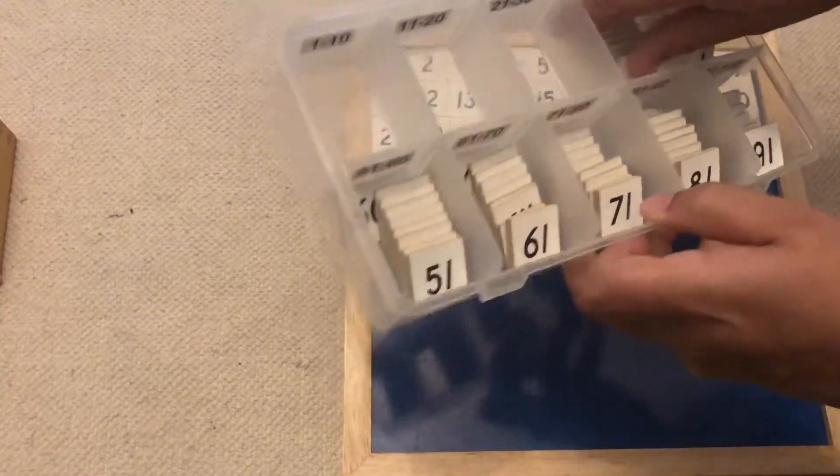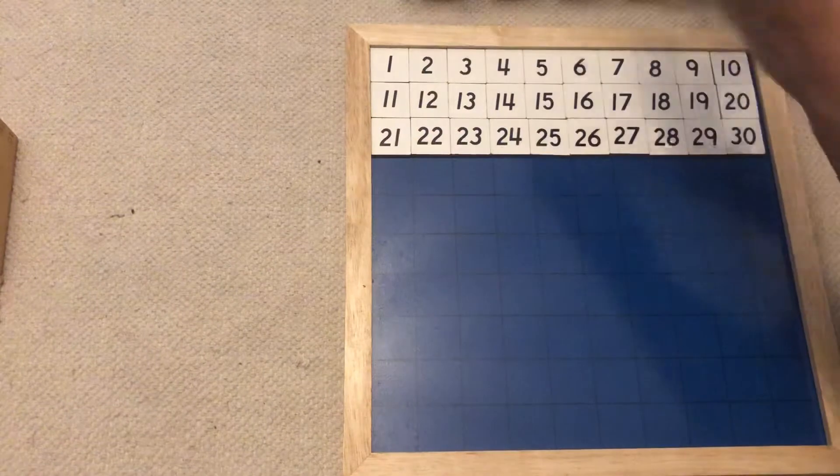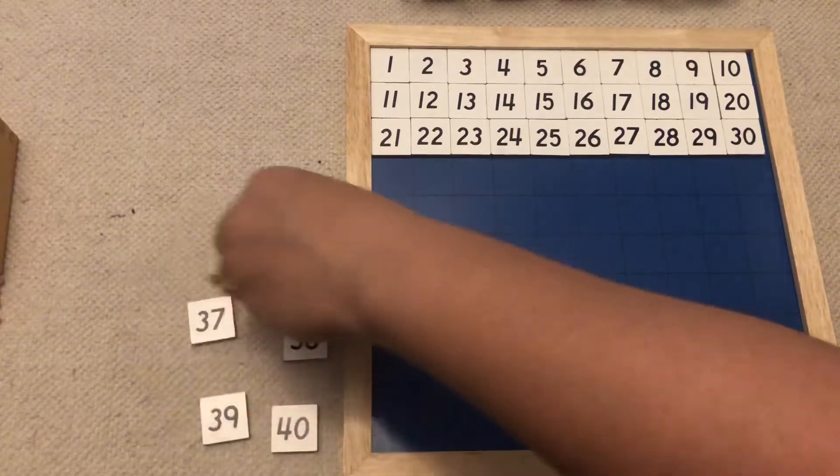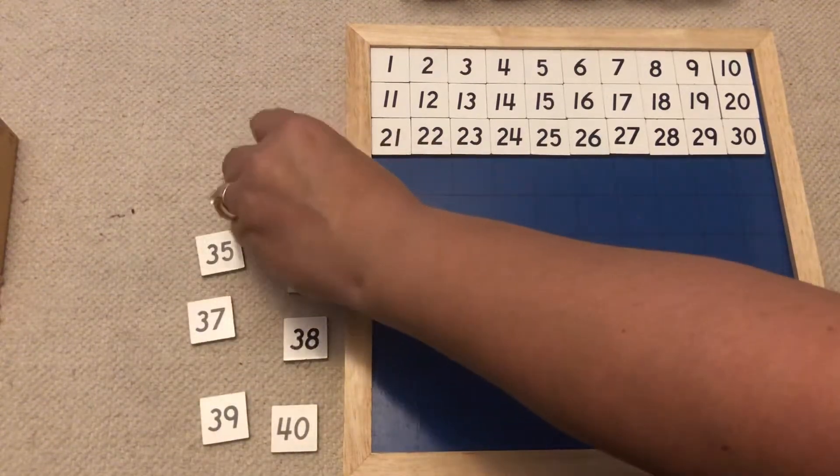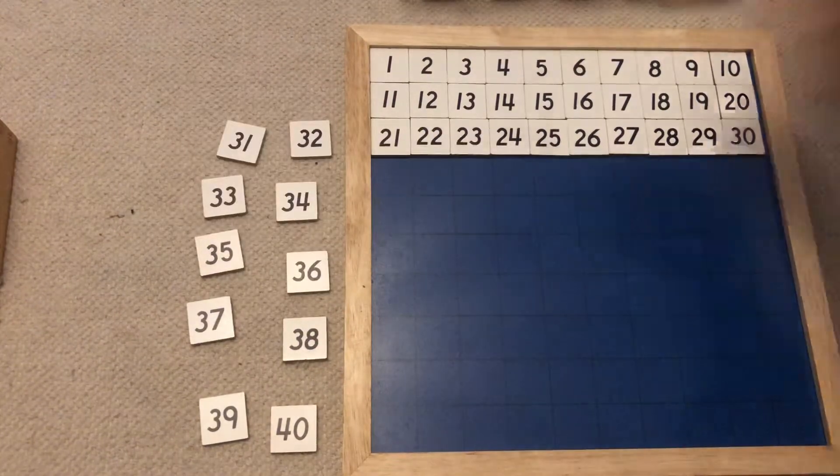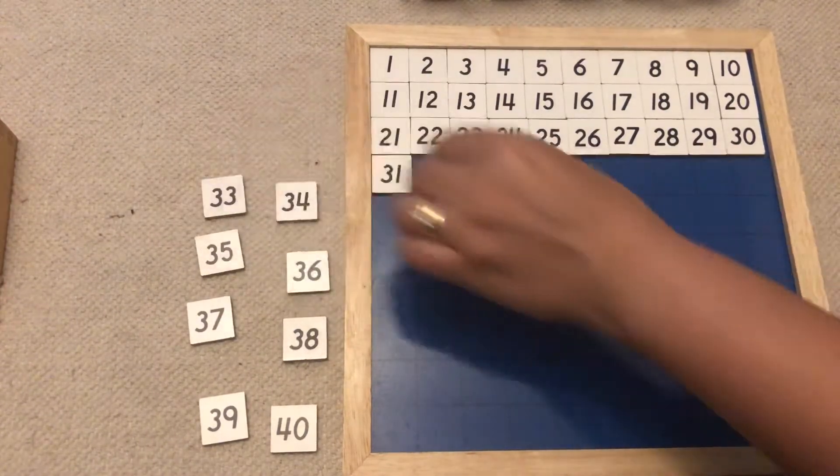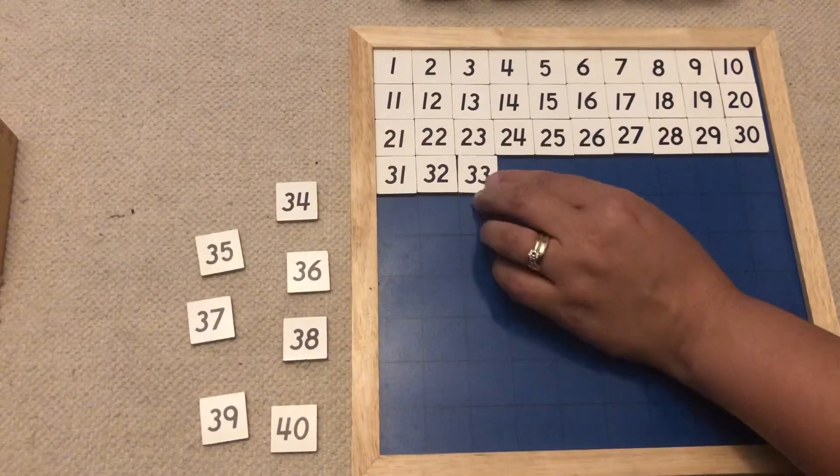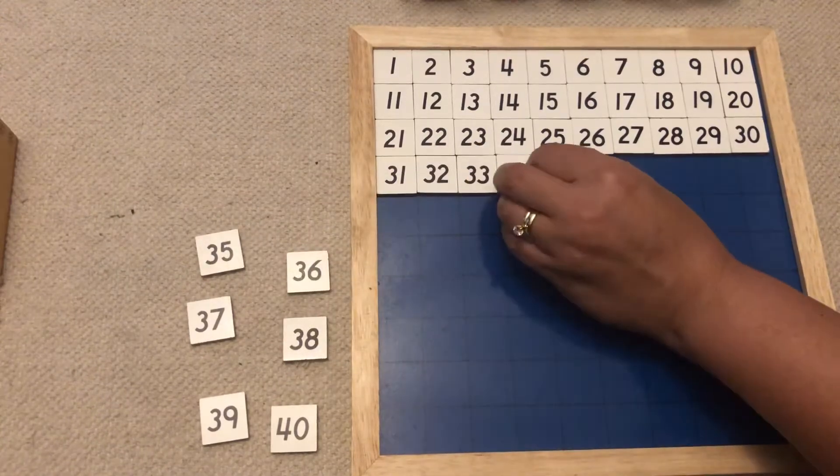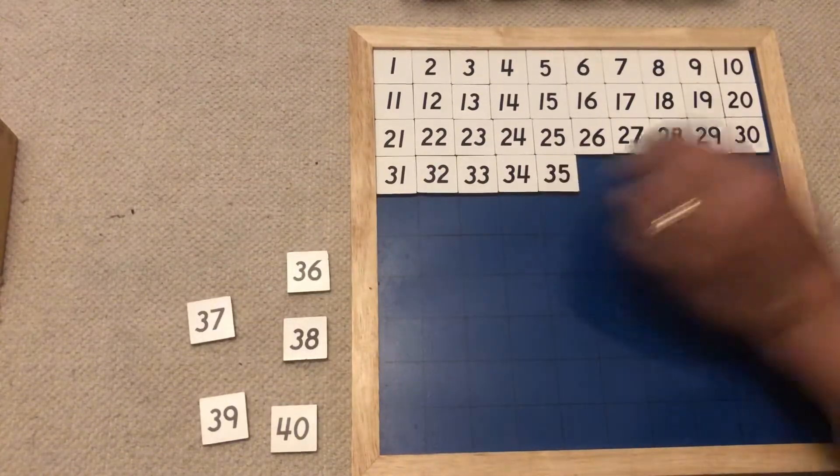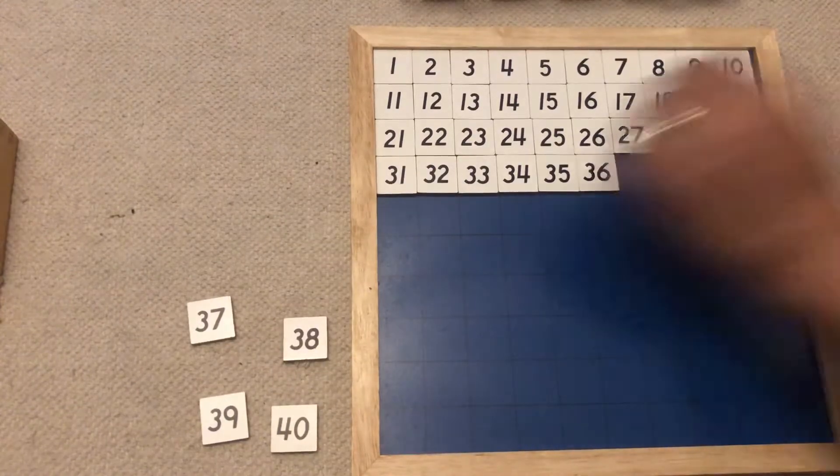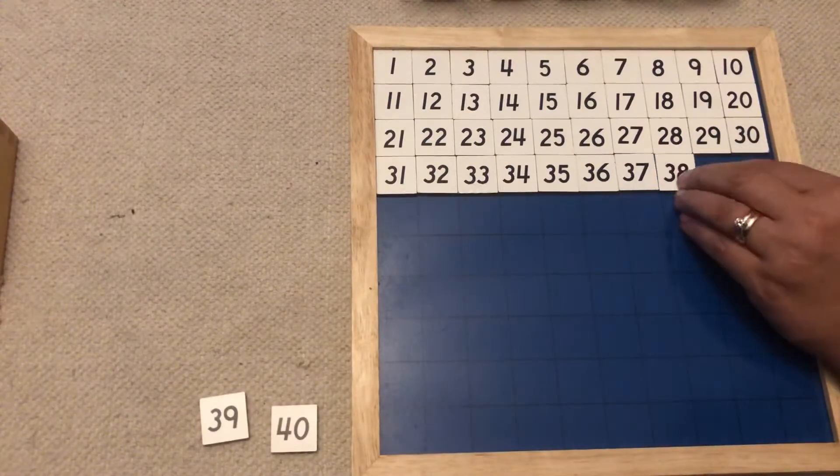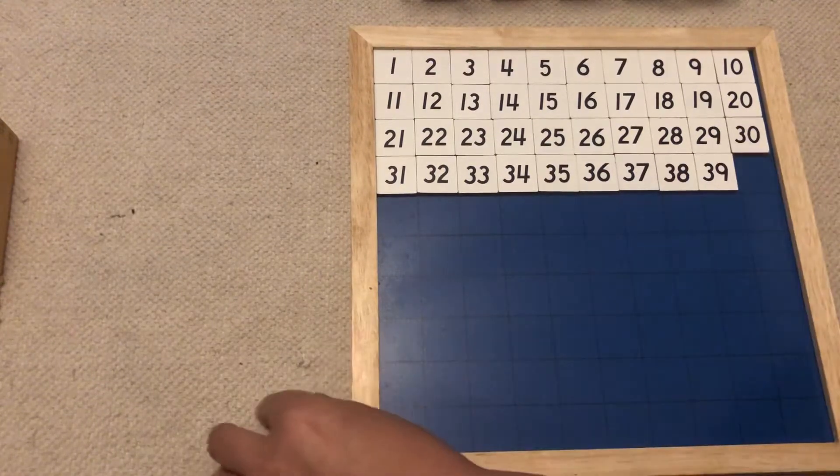Next row. And I see 31 right on the top. 31, 32, 33, 34, 35, 36, 37, 38, 39, 40.